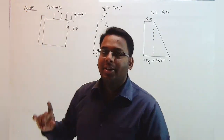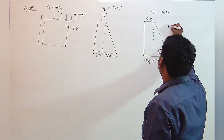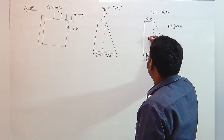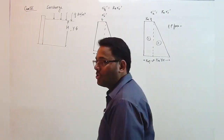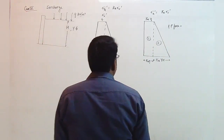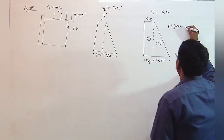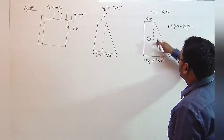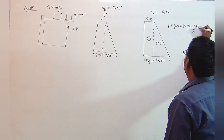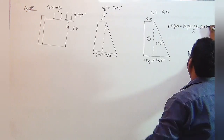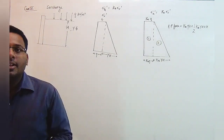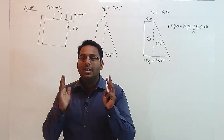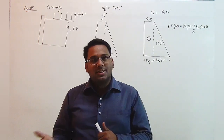The earth pressure force for this diagram can be calculated using the areas of two geometrical figures. The area of the first figure — a rectangle — equals Ka · q multiplied by height H, whereas for the second triangle it equals half · Ka · gamma · H · H. You can calculate the line of action of the force using Varignon's theorem, as described in the previous video.